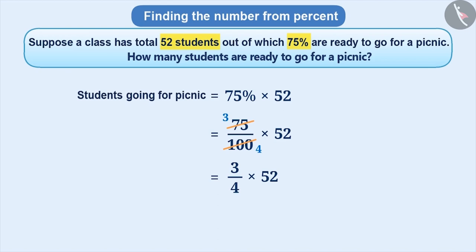Now, we multiply 3 by 4 by 52. Here, we can divide 52 by 4, whose result is 13. Then, we multiply 13 by 3 to get 39.